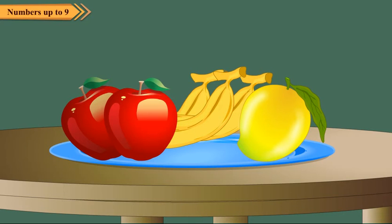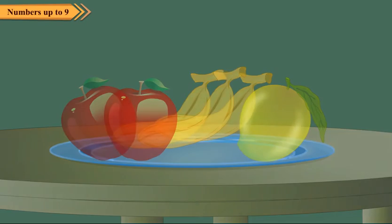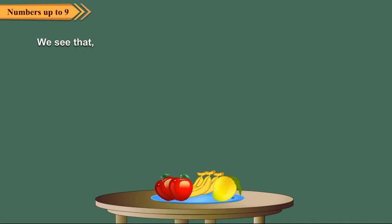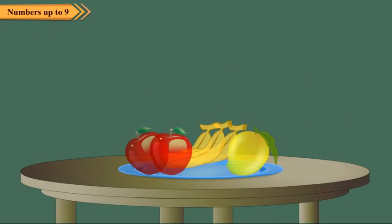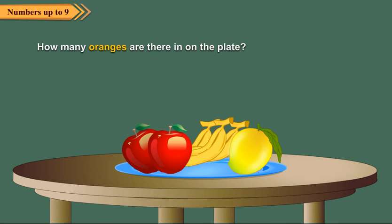Observe the plate full of fruits. We see that there are two apples, three bananas and one mango on the plate. How many oranges are there on the plate?